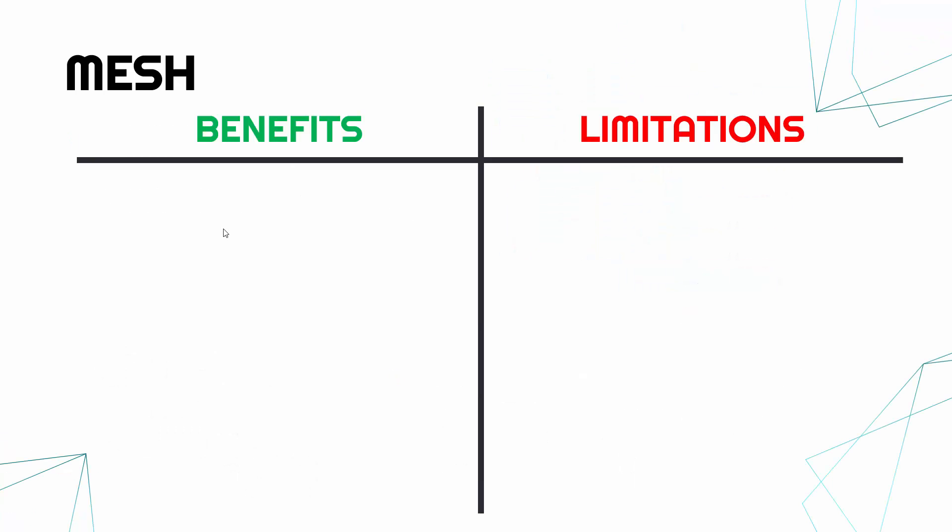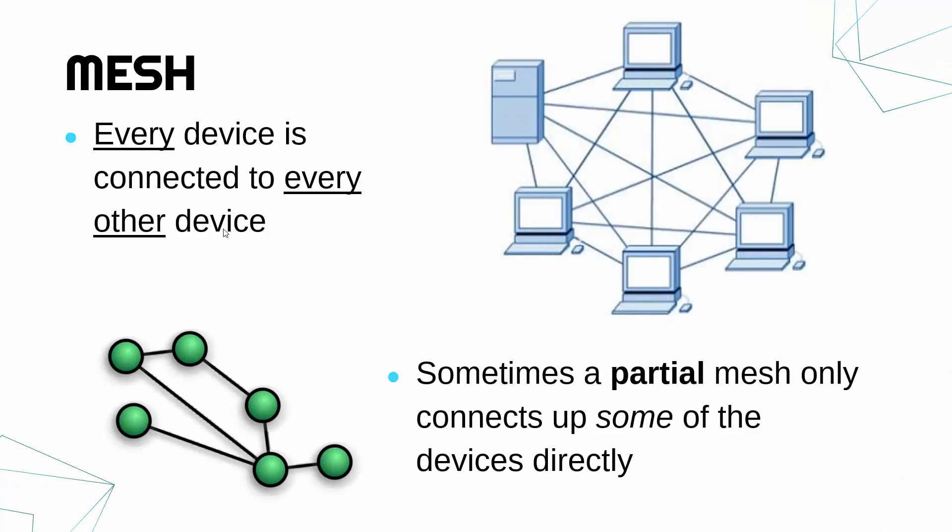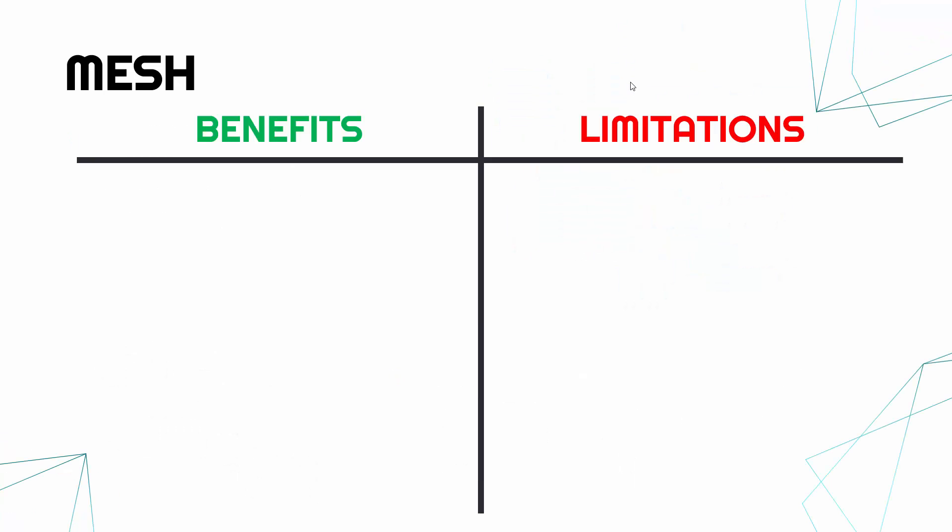Now in terms of benefits, mesh is pretty good in terms of, well, if one cable goes down, you've got plenty of backup routes. The whole point here is to have backups. If one or more cables goes down, you've got plenty of backups. You can go via other computers. There are plenty of alternative routes to get through.